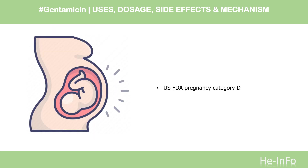Safety Advice. Systemic gentamicin belongs to Category D of FDA Pregnancy Risk Classification, meaning that although there is evidence of human fetal risk, its use is acceptable if the possible benefits overcome the risks.